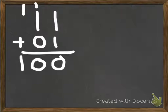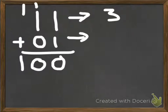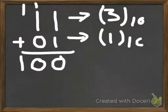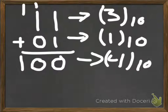It's always good to check your answers. In this top number we have the decimal equivalent of two to the zero plus two to the one, which is one plus two, so that's three. Then here we have one, and the result we should get is four, which is two to the second.